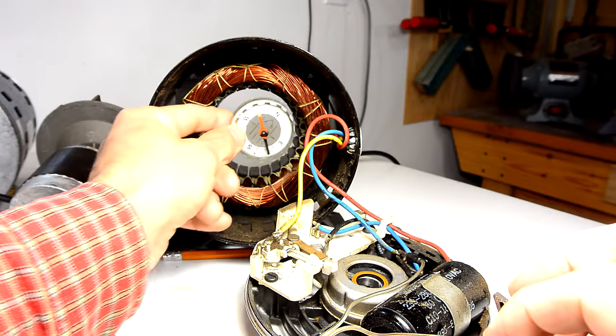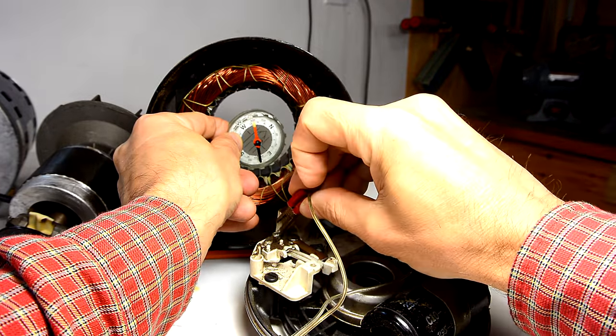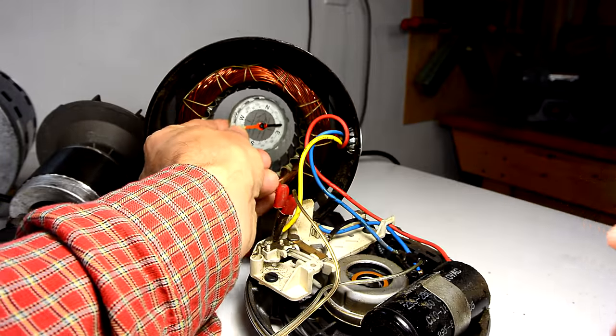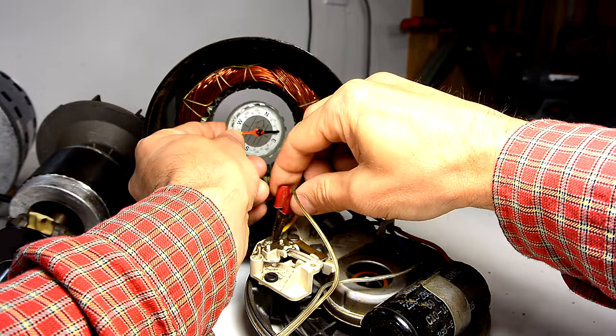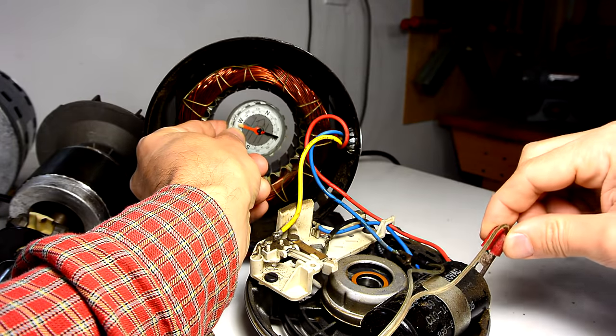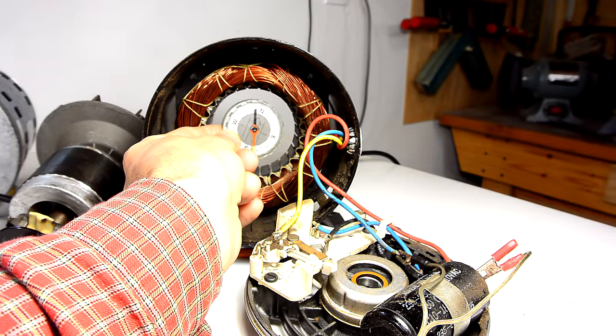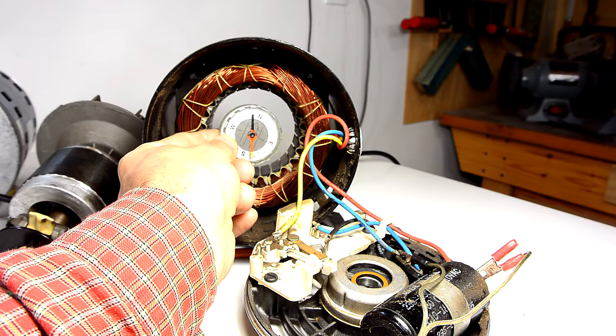Now if I put a compass in here and I put DC through the main winding you can see we have a horizontal magnetic field. And if I move that clip to activate the starter winding you can see we have a vertical magnetic field. So those windings are 90 degrees out of phase with each other.